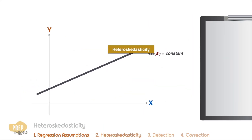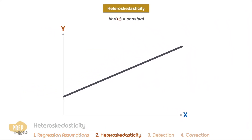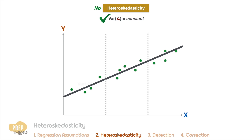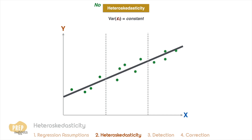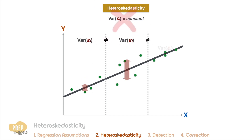Let's start with heteroscedasticity. If the assumption that the variance of the residuals is constant across observations holds, the standard deviation of the residuals should be the same if we segregate the observations into subgroups. When the variance of the residuals is not the same across the different subgroups, the observations exhibit heteroscedasticity.